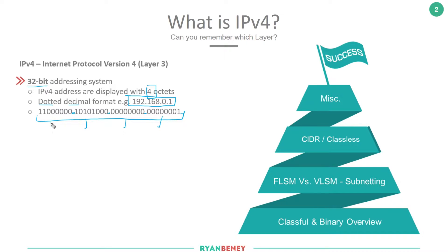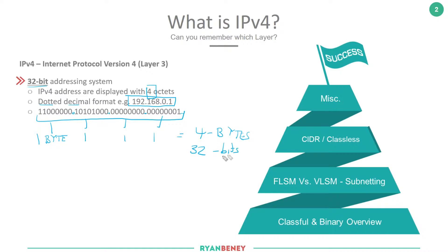There are four octets in total. Within each octet there are eight bits, and eight bits equal one byte. So there are four bytes in total, and four times eight is 32 — so we know there are 32 bits. Instead of calling them bytes we tend to refer to them as octets. Each octet contains eight bits, four times eight is 32, giving us 32 bits in total.